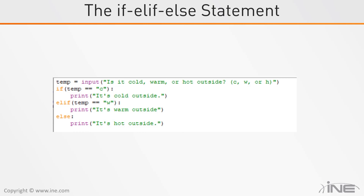Now if the user puts in C and it prints 'it's cold outside,' it's not going to do the elif and the else. Those only run based on their condition: if the if is true, it'll run; if it's false, it'll jump to elif. If elif is true, it'll run; if that's false, it'll jump to else. Else will run only if both the if and the elif are false.